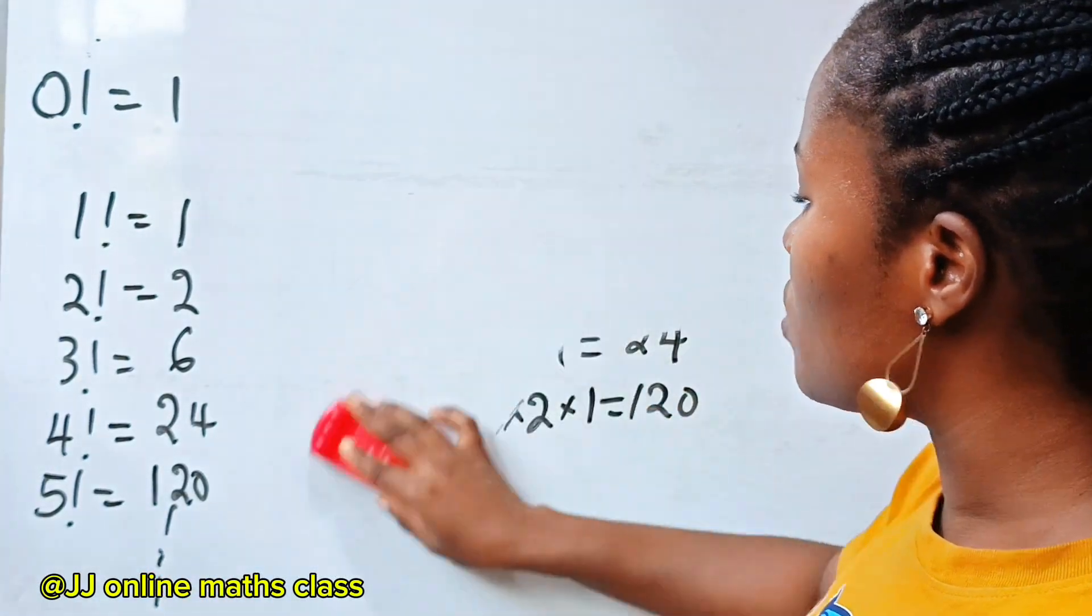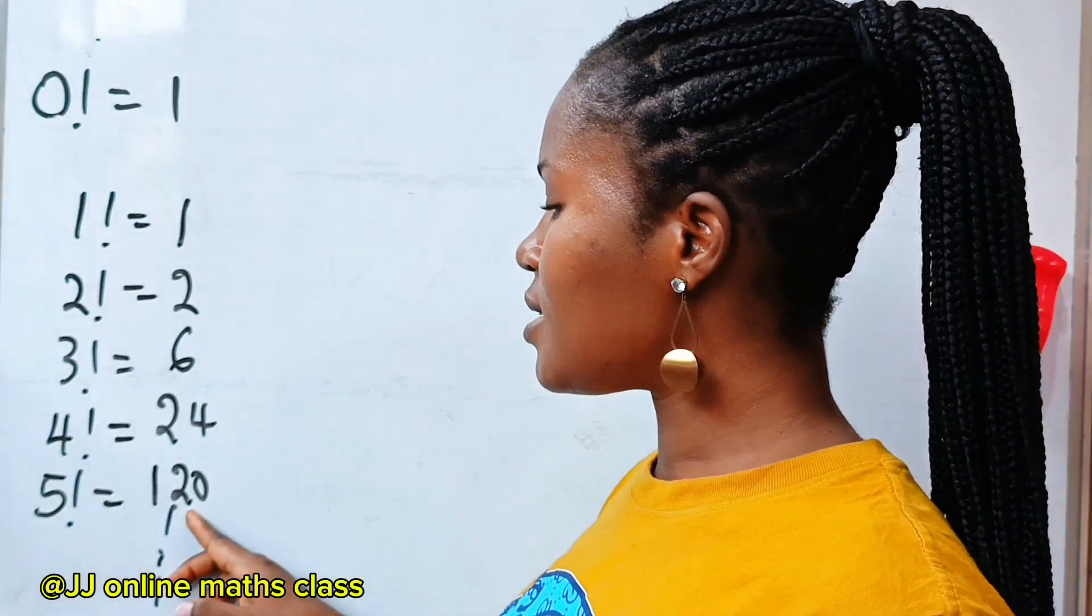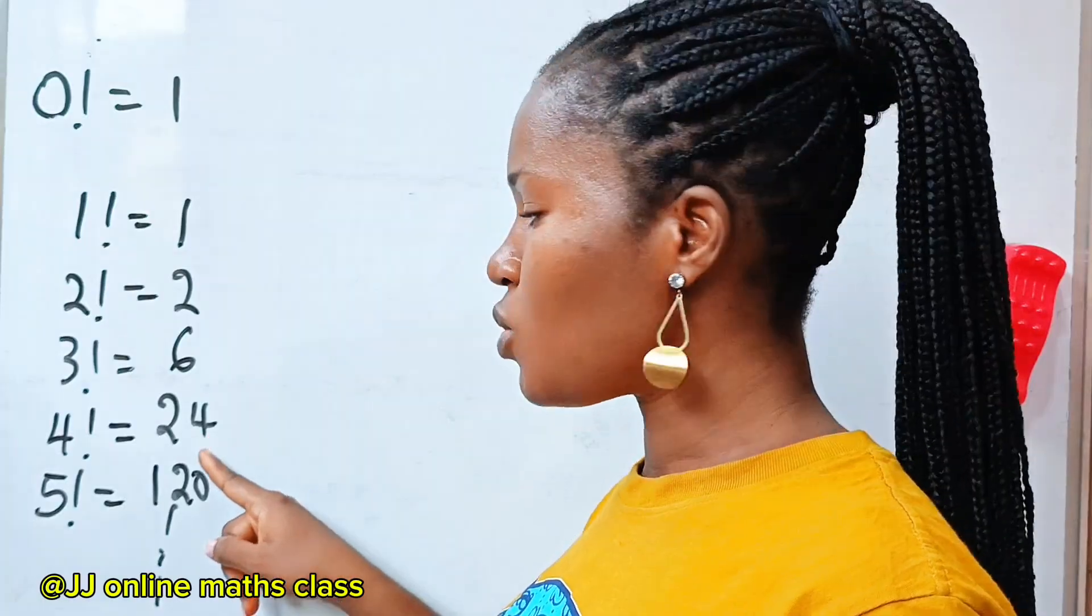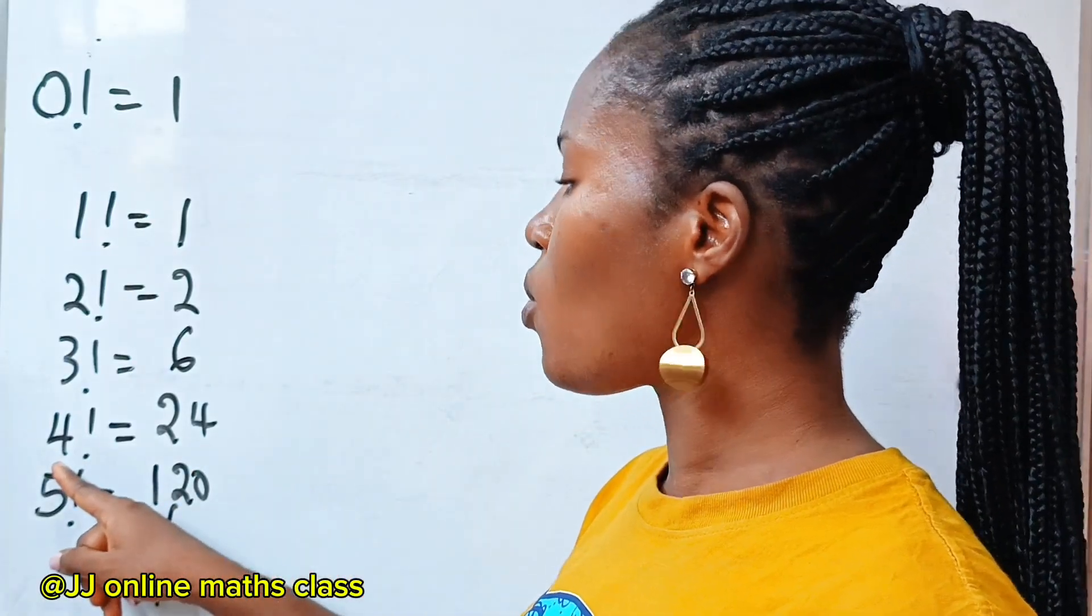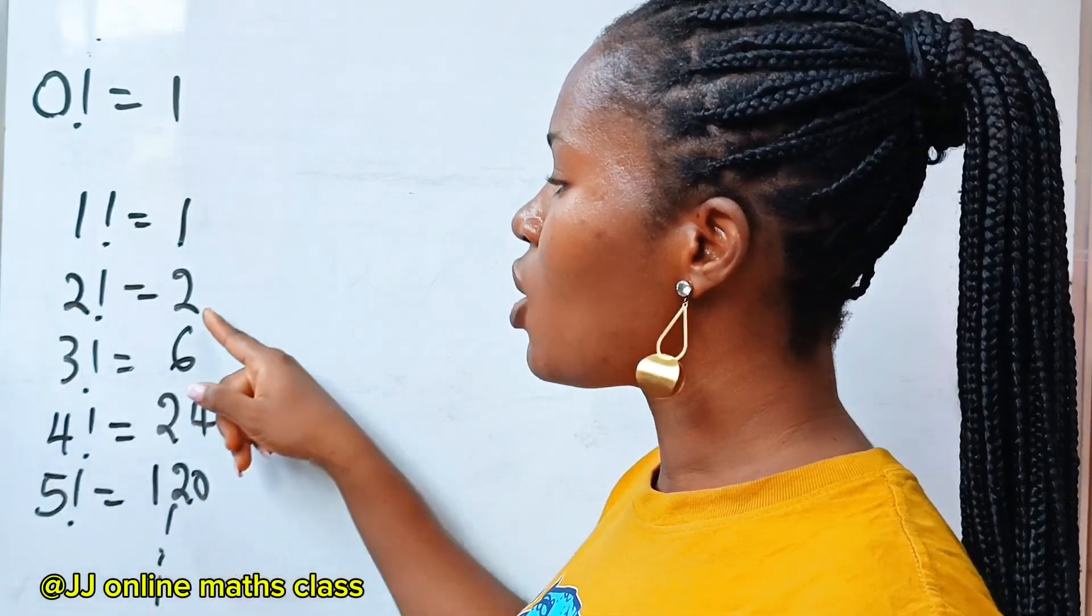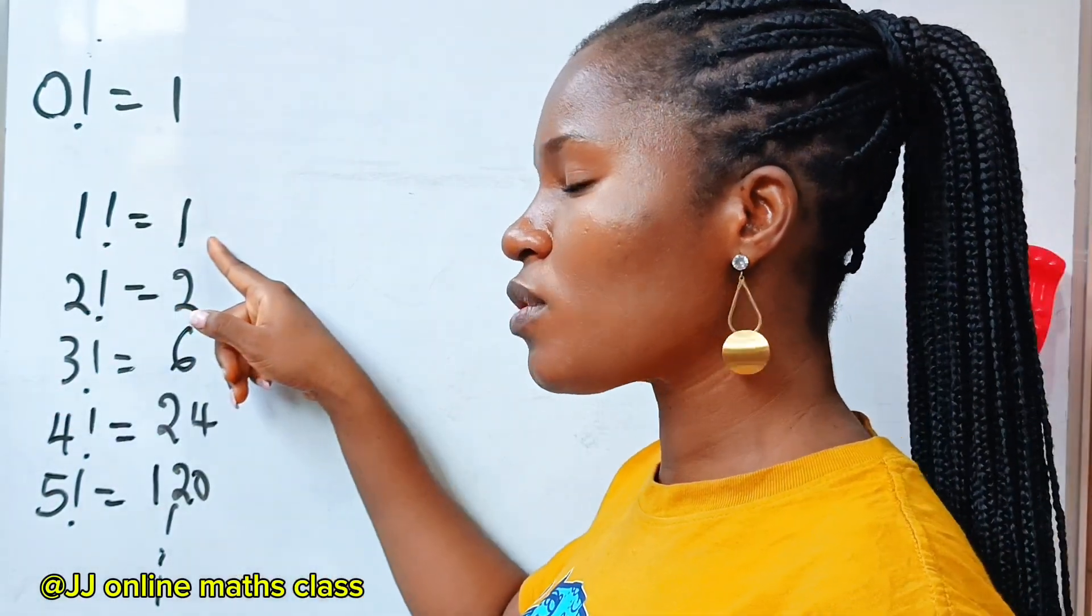Now, where am I driving at? I want us to look at this and you will notice a pattern. 120 divided by 5 will give us 24. 24 divided by 4 will give us 6. 6 divided by 3 will give us 2. 2 divided by 2 will give us 1.